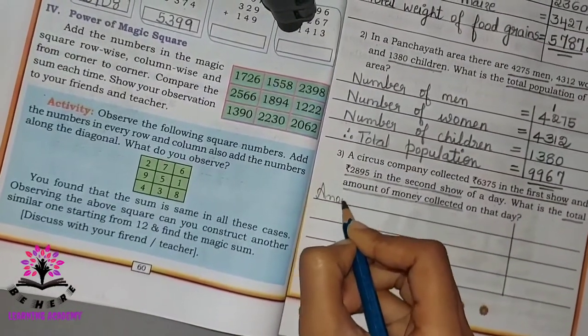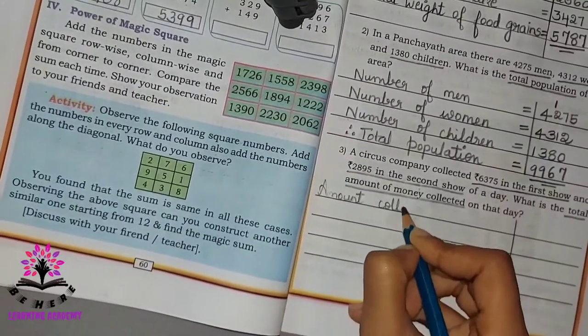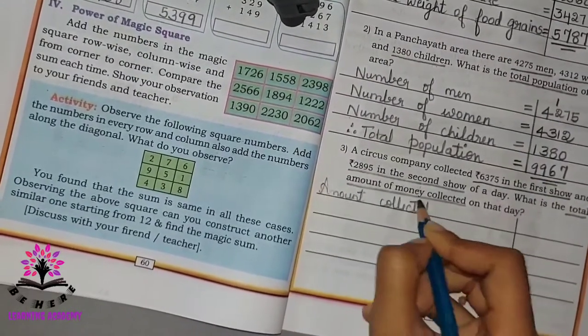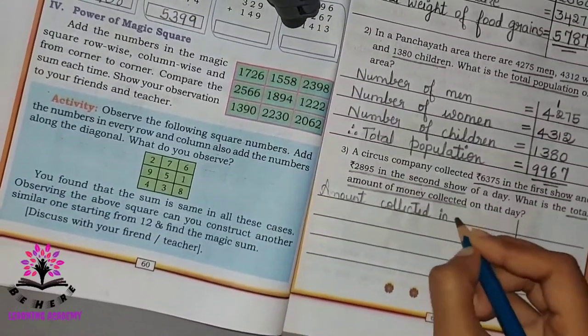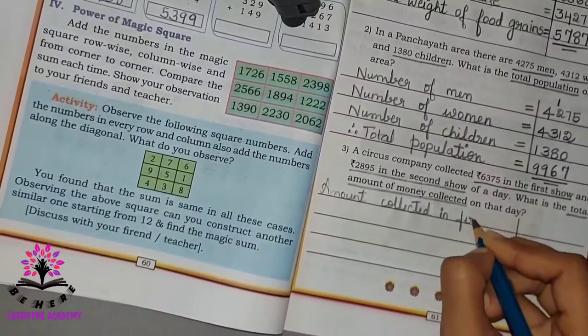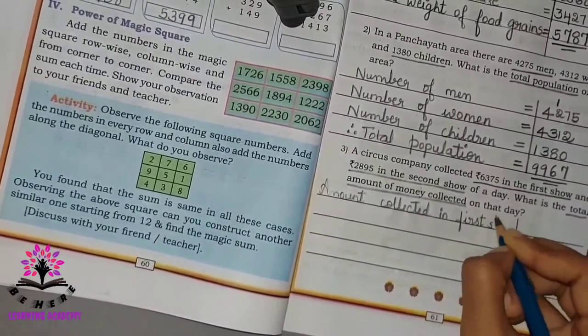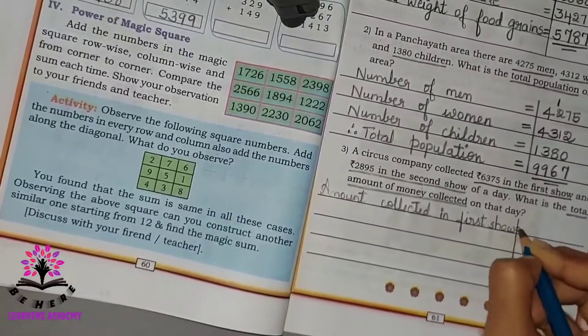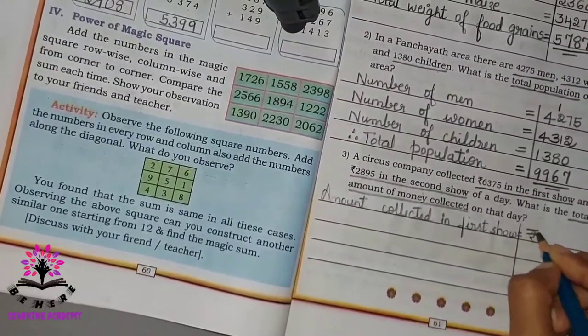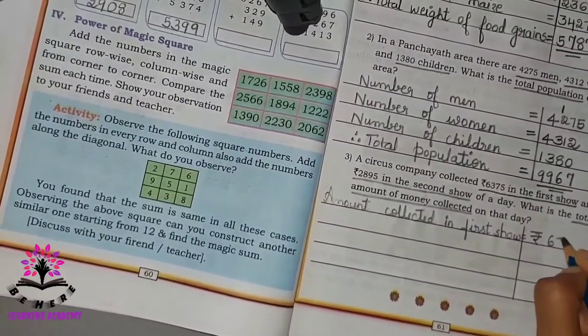Amount collected in the first show, in the first show, is equal to Rs. 6,375.